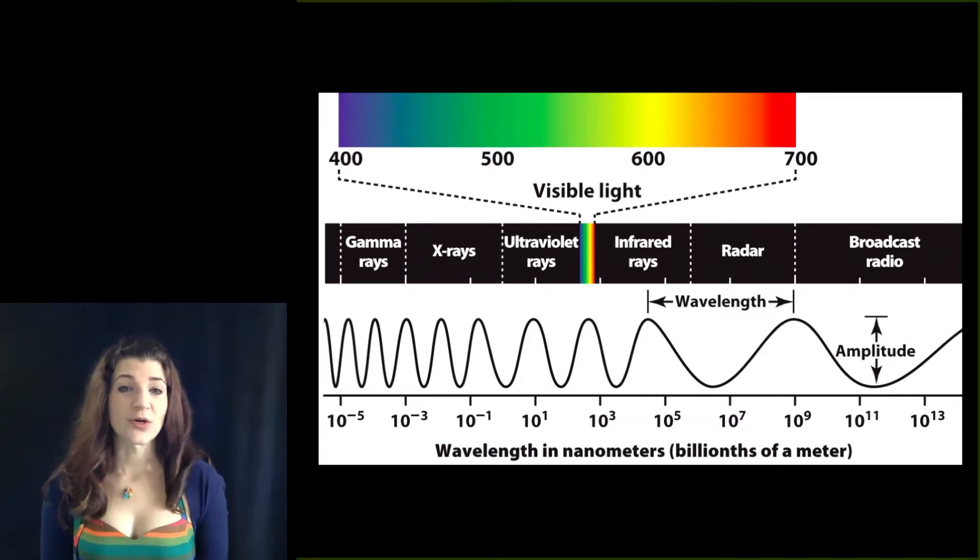So if we have a light source that produces 700 nanometer light, we are likely perceiving that as red. However, many of the things that we see produce or reflect multiple wavelengths simultaneously.